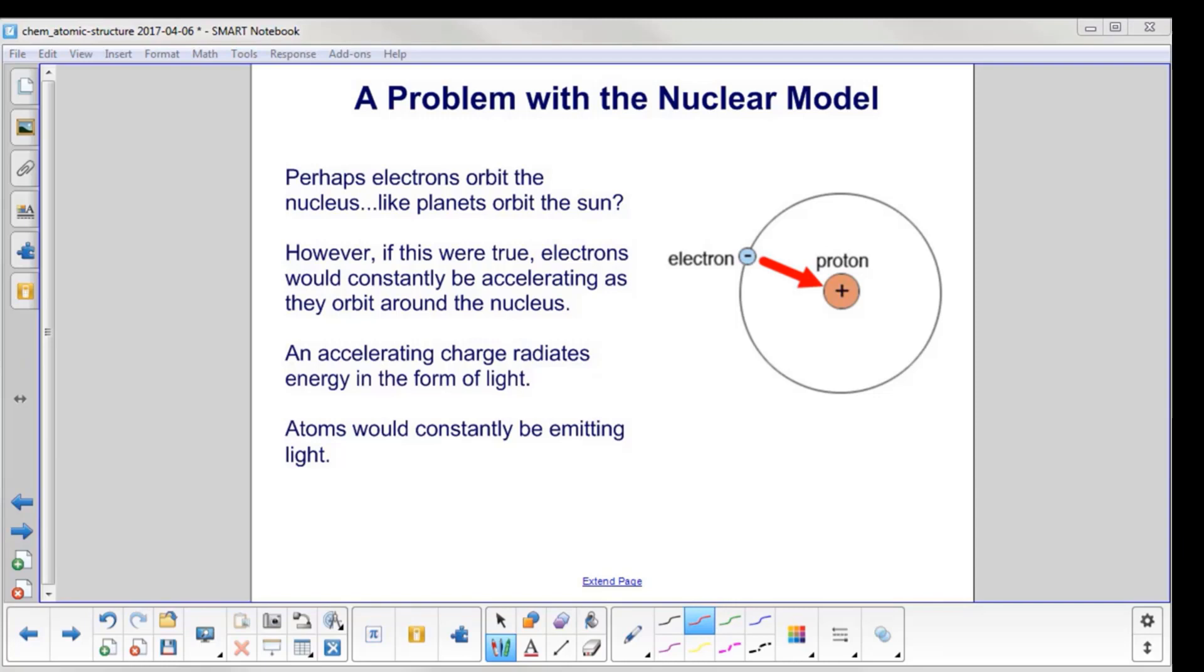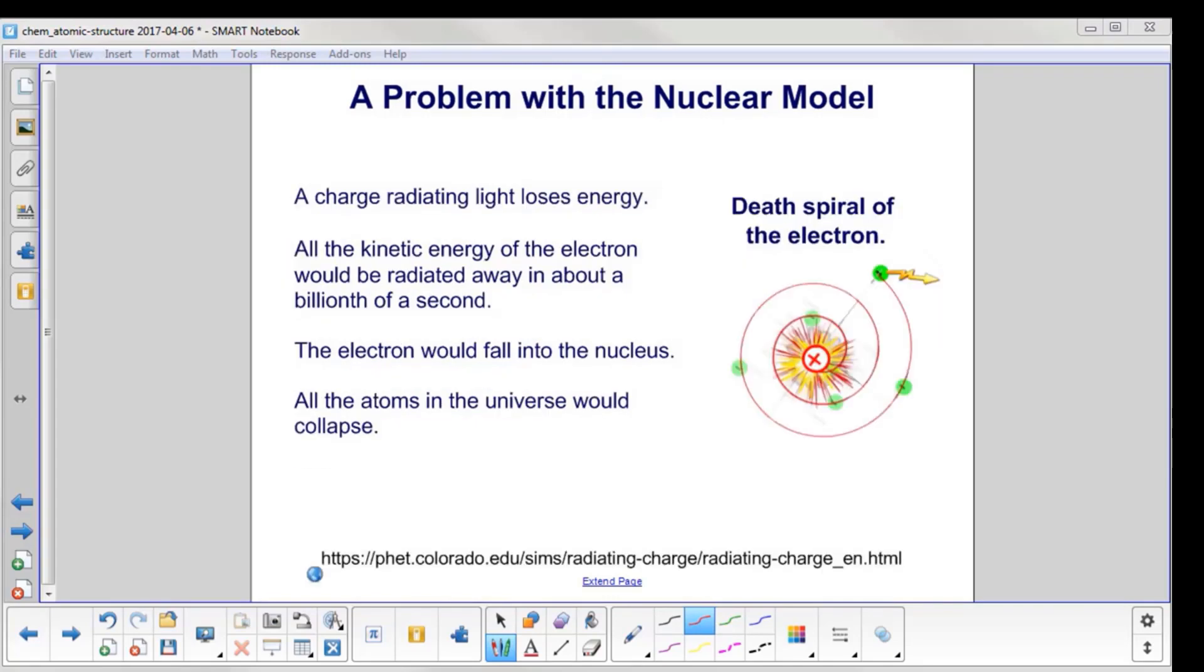Now one thing about charges, when they accelerate, they will radiate energy in the form of light. So atoms would constantly be emitting light and losing energy. So this accelerating charge, which is radiating light, is also losing energy.